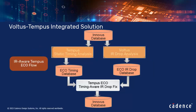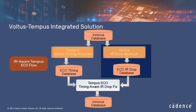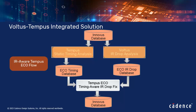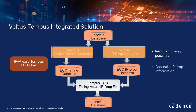In the IR-aware Tempus ECO flow, the IR drop analysis is run using Voltus rail analysis, which provides feedback on hot spots to Tempus ECO to make the ECO changes and reduce the IR drop. This methodology enables design engineers to achieve reduced timing pessimism and more realistic voltage drop information across the chip.